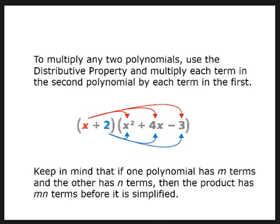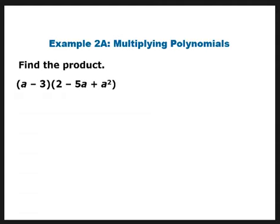Now we're going to move forward and talk about what happens when you have something more than just a monomial times a polynomial. In this case I'm going to have a binomial times a trinomial — or essentially, if you want to keep things really general, we just say we have a polynomial times a polynomial. It's not foiling because it's not two terms times two terms. So I'm going to distribute each term in the first parenthesis to each term in the second parenthesis — essentially distributing twice. Taking the a and distributing it to everything in the second set of parentheses gives me 2a minus 5a² plus a³.